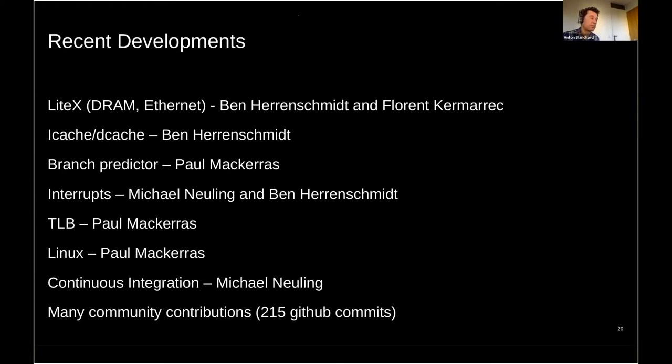We've had branch predictors from Paul McHarris. Interrupts and exceptions come from Mikey and Ben. A TLB, and that's a translation lookup buffer. That's for the MMU for being able to translate addresses that Linux needs. That was Paul. And then, ultimately, we got Linux going, thanks to Paul.